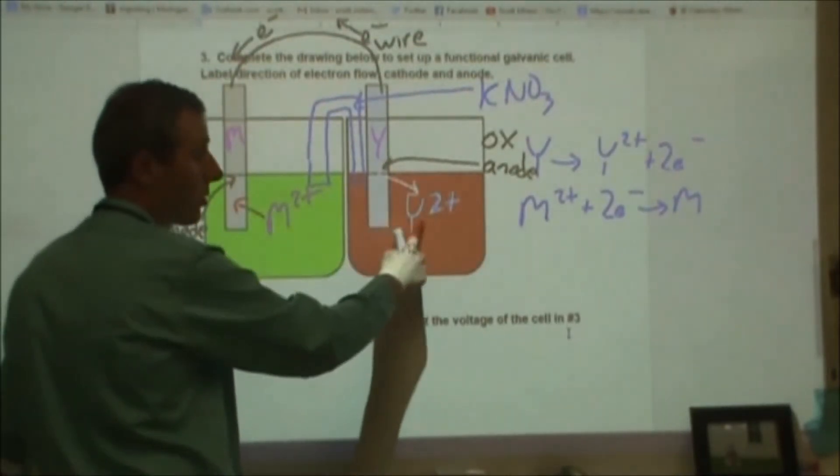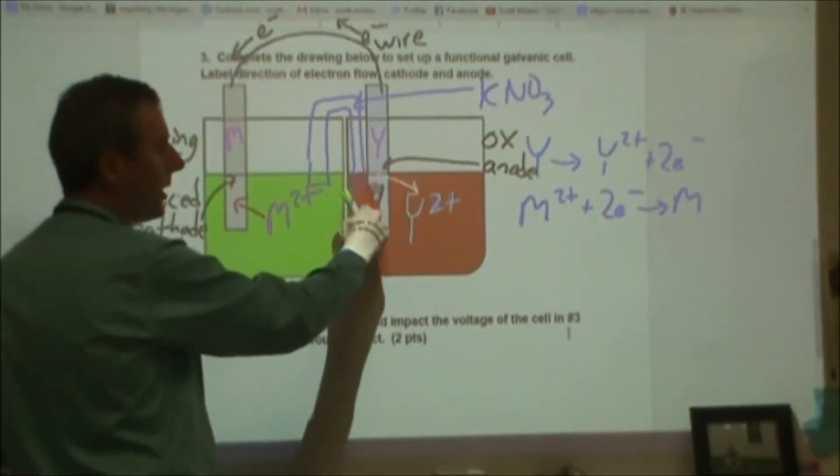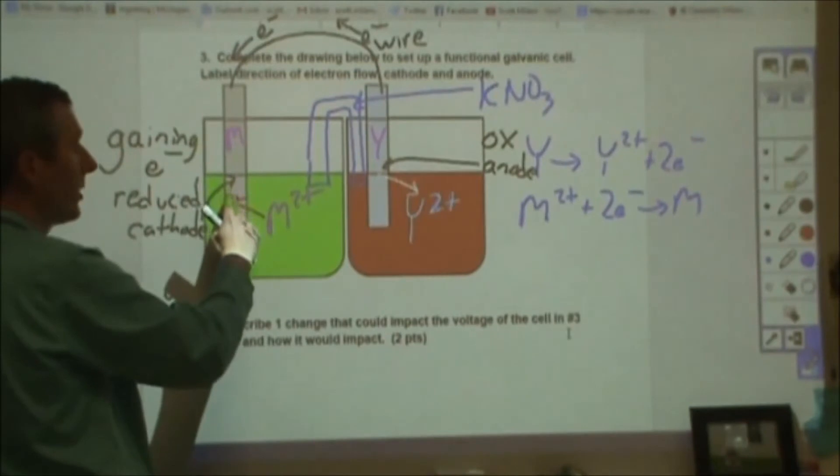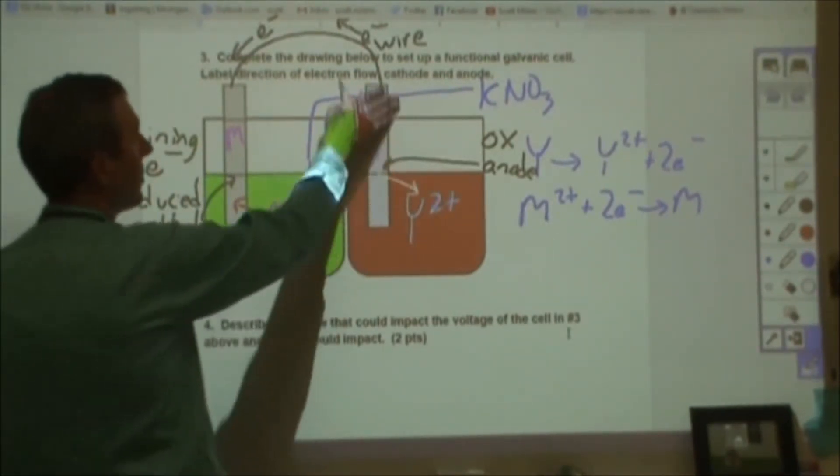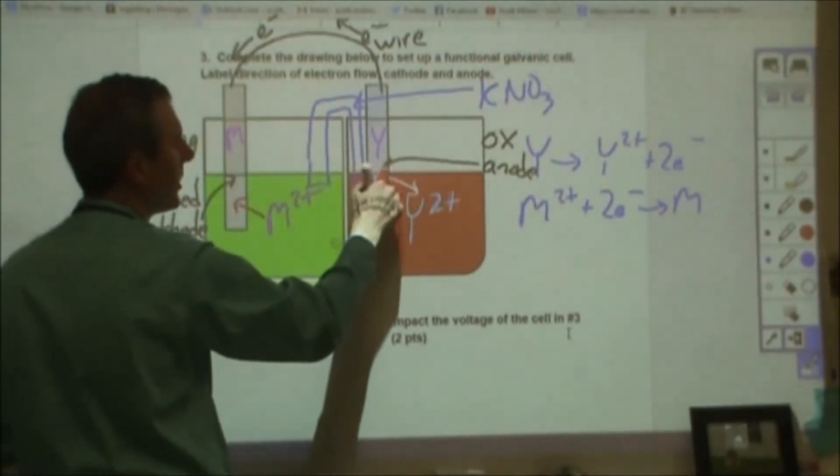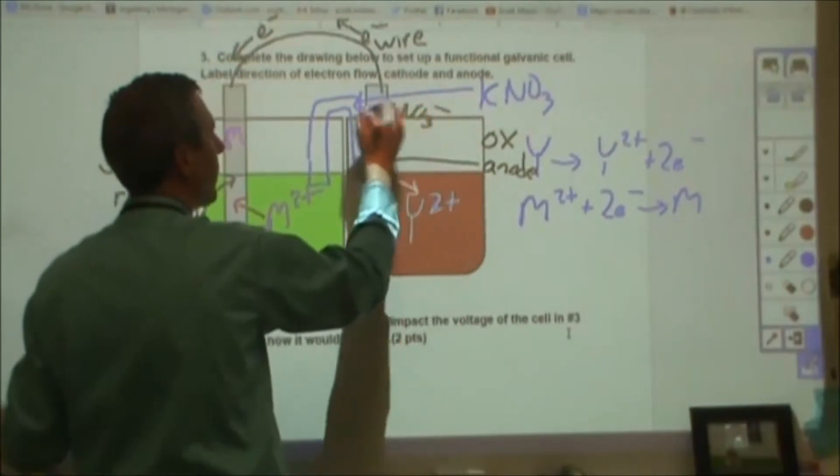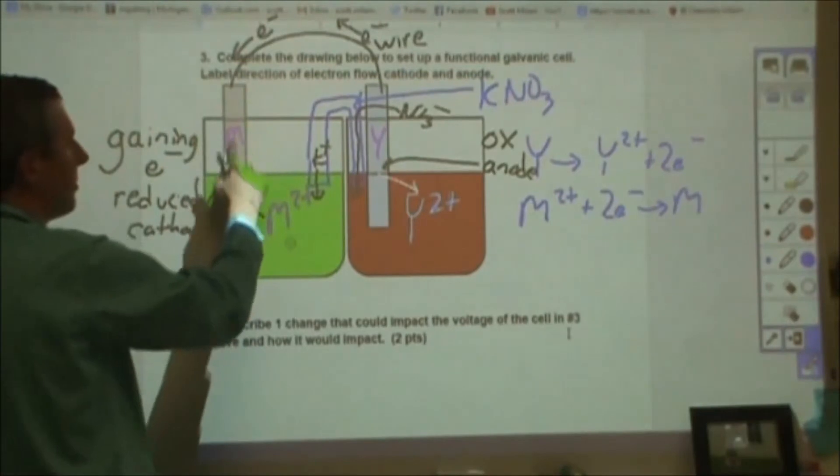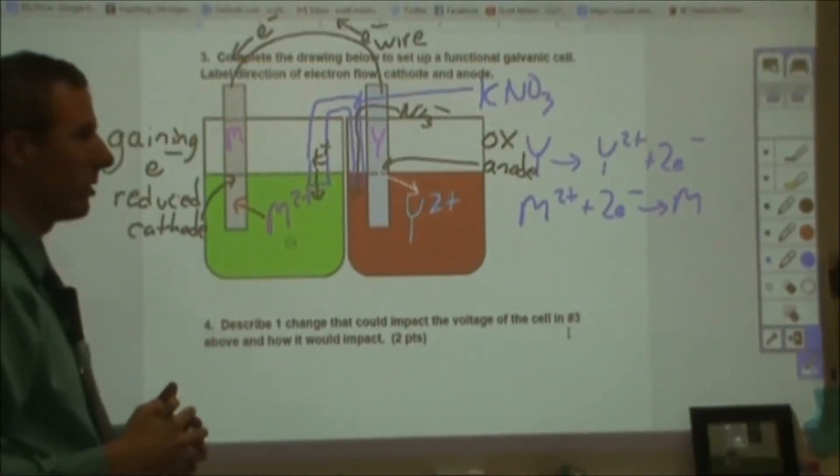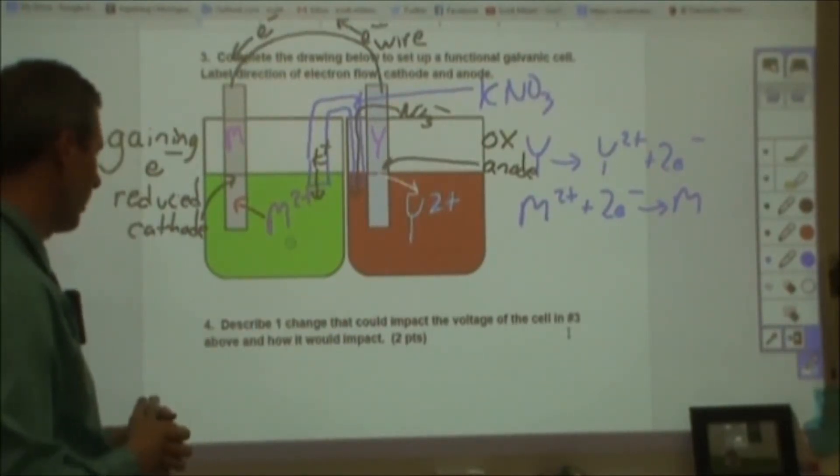In addition to that, we would also see the concentration of Y2+ would go up. The amount of Y would decrease over time and M would increase in mass over time. The concentration here would go down. And then also, because the electrons are leaving here to go over here, we're losing negative charge. So we would see nitrate ions flowing from here into here and we would see potassium ions flowing into here to keep the excess negative charge balanced in terms of total charge. And then if we had a reduction potential list, we could add those two together and end up with a total voltage.